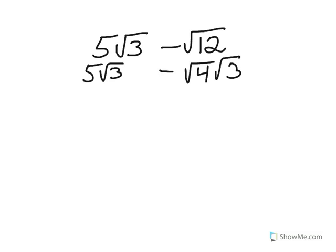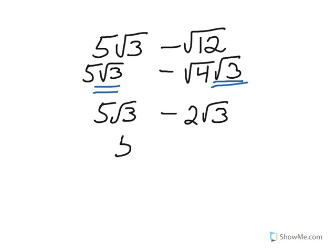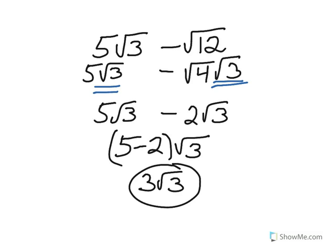We want √3 in the second term so we can subtract them. √4 is 2, so we have 5√3 - 2√3. Now we're ready to subtract like terms. We take 5 minus 2 and write our √3. 5 - 2 is 3, so 3√3 is our final answer. Please pause the video and copy this into your notes.